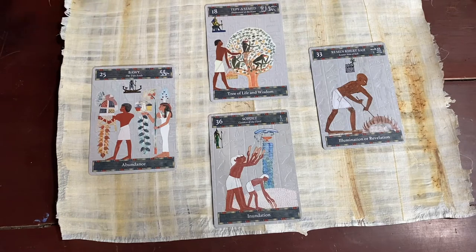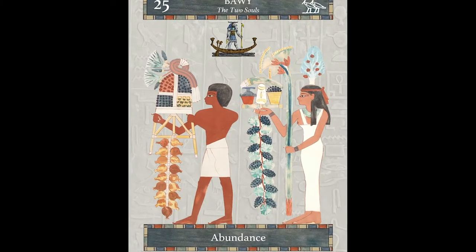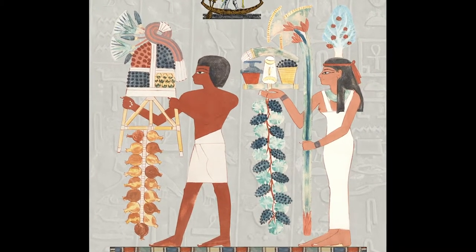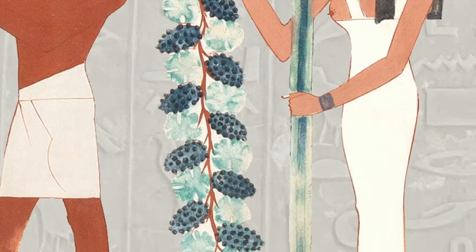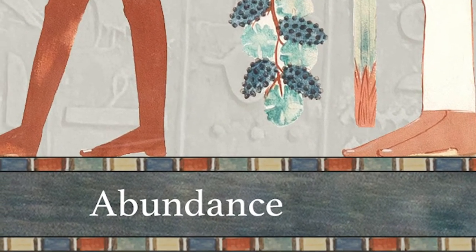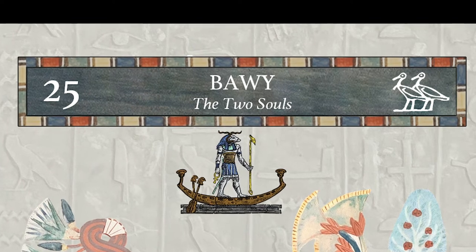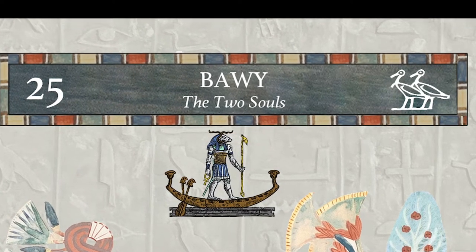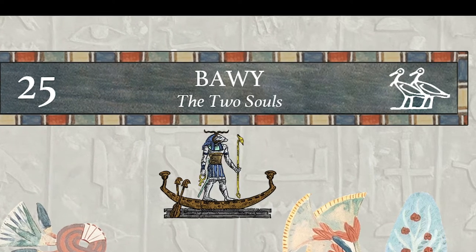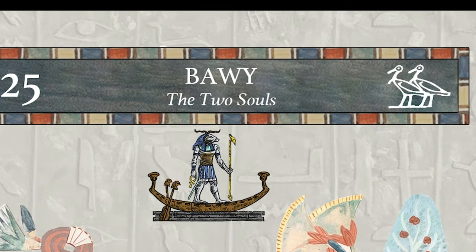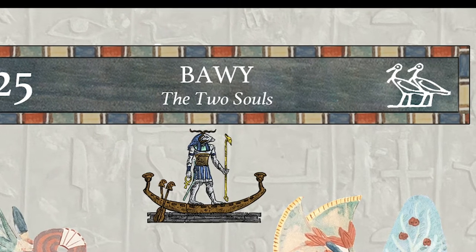The first card is Abundance — Bawe, the Two Souls. Bawe the Two Souls represents two people that are together; it's a relationship card, and it also signifies abundance. From this perspective, the beginning of my journey, the underlying experience of spending time with my son is going to be two souls together, and also the concept of abundance. So we're probably going to have a pretty good time together.